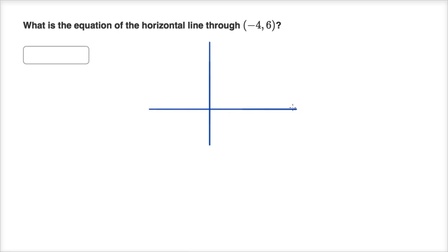So if this is my x-axis, that is my y-axis. I'm going to go negative four in the x-direction — one, two, three, four — negative four, and then one, two, three, four, five, six in the y-direction. So the point that we care about is going to be right over there: negative four comma six.